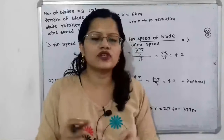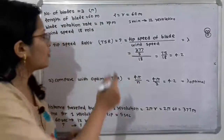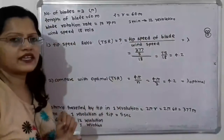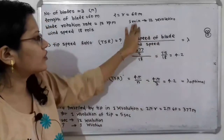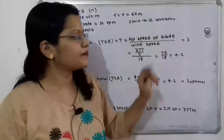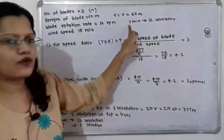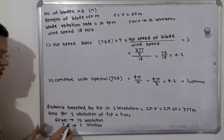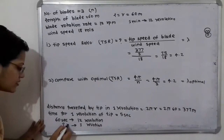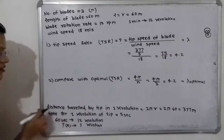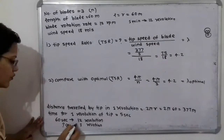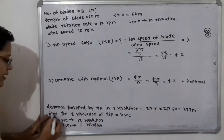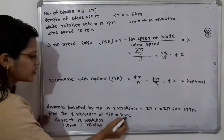Now we find the time for one revolution. The blade rotation rate is 12 revolutions per minute, meaning 12 revolutions in 60 seconds. For one revolution, the time x satisfies: x × 12 = 60 × 1, so x = 60 ÷ 12 = 5 seconds per revolution.